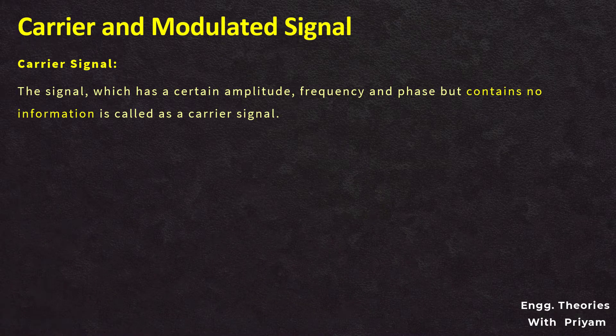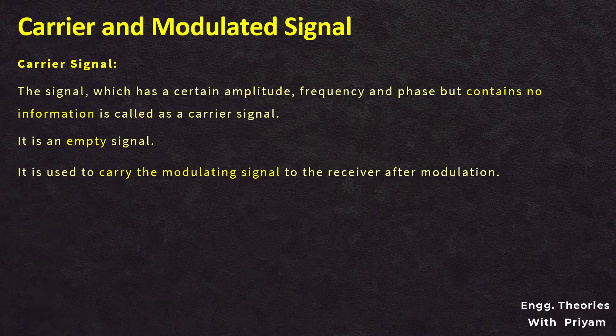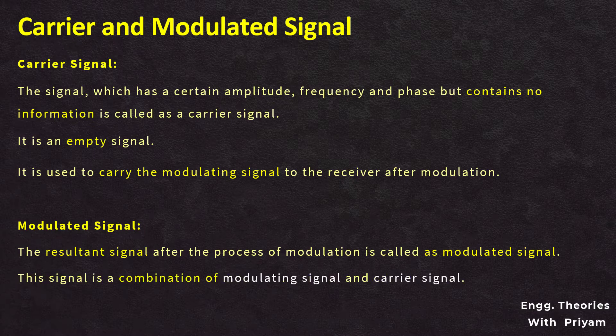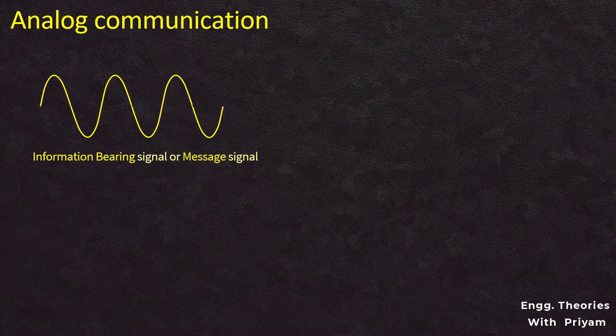The carrier signal is a signal which has a certain amplitude, frequency, and phase but contains no information — it is an empty signal. It is used to carry the modulating signal or message signal to the receiver. The modulated signal is the resultant signal after the process of modulation; it is a combination of the modulating signal and the carrier signal.